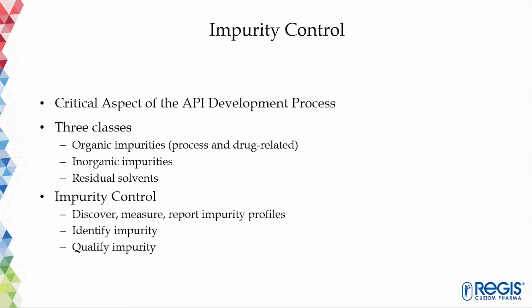Back to the topic. Impurity control is a critical aspect of the API development process. The level of impurity in a drug substance or drug product may have a significant impact on the safety of consumers — that is, the patients who are using it to fight their illness.